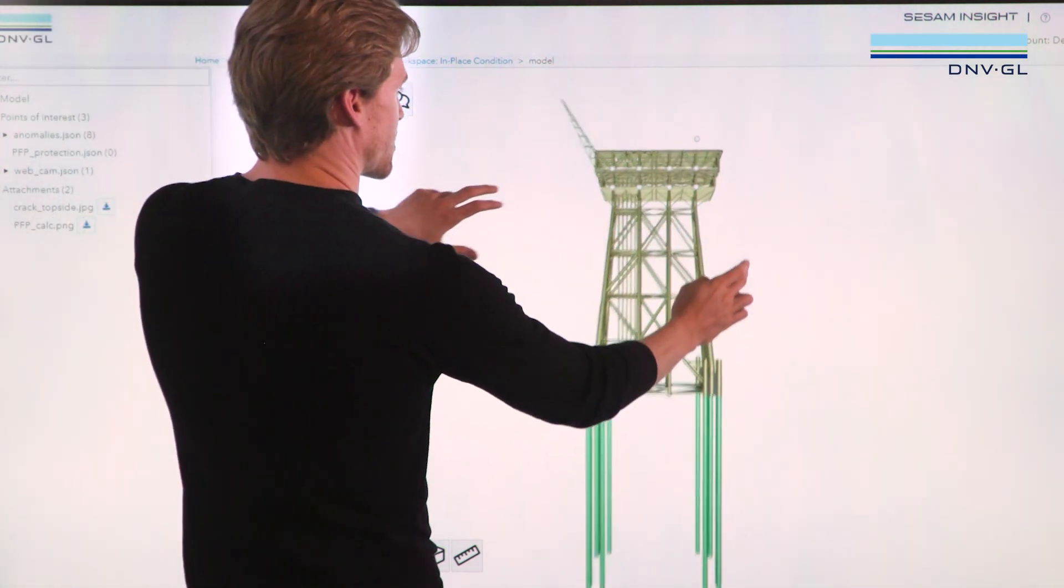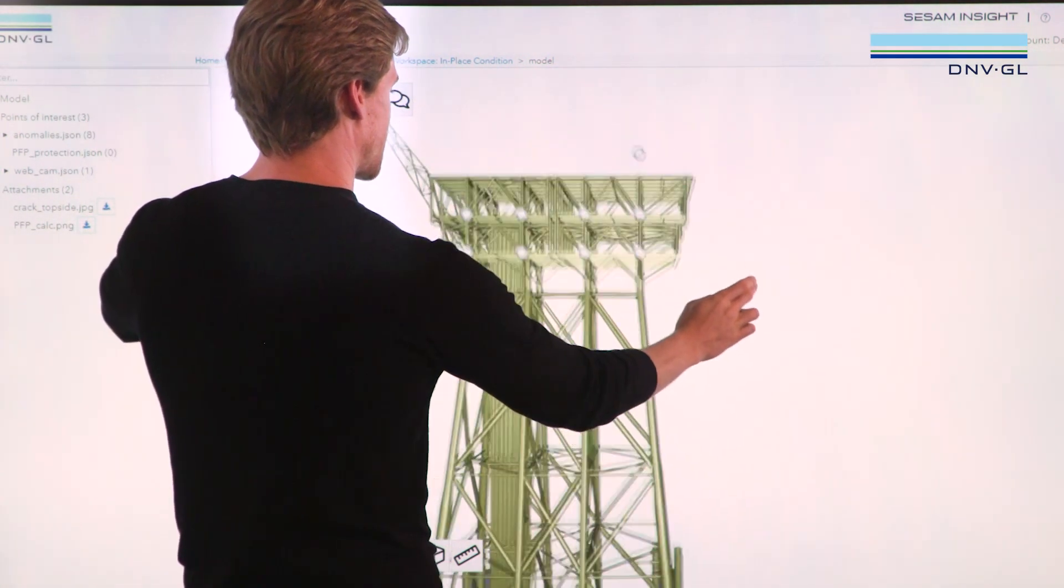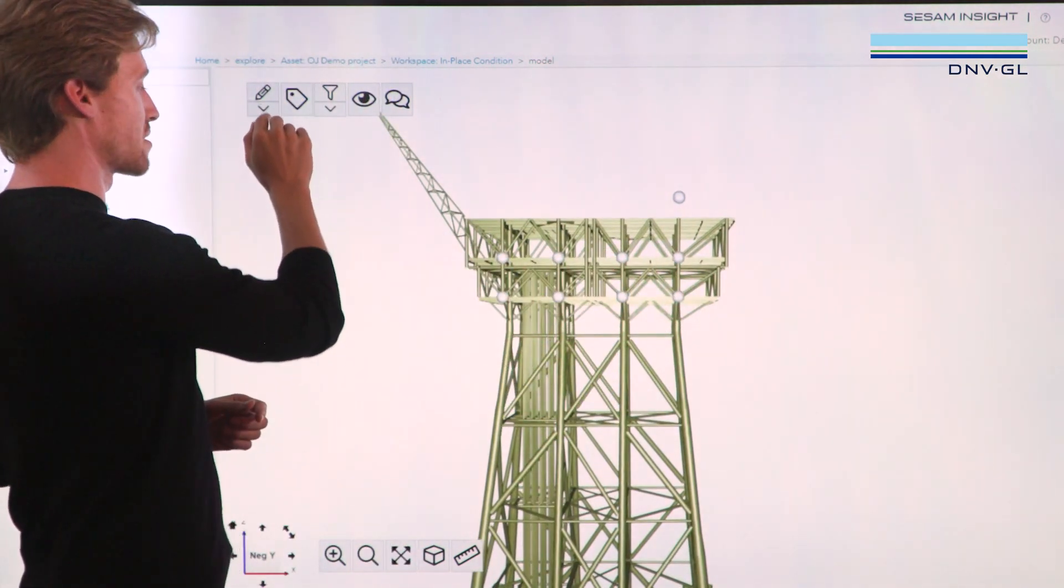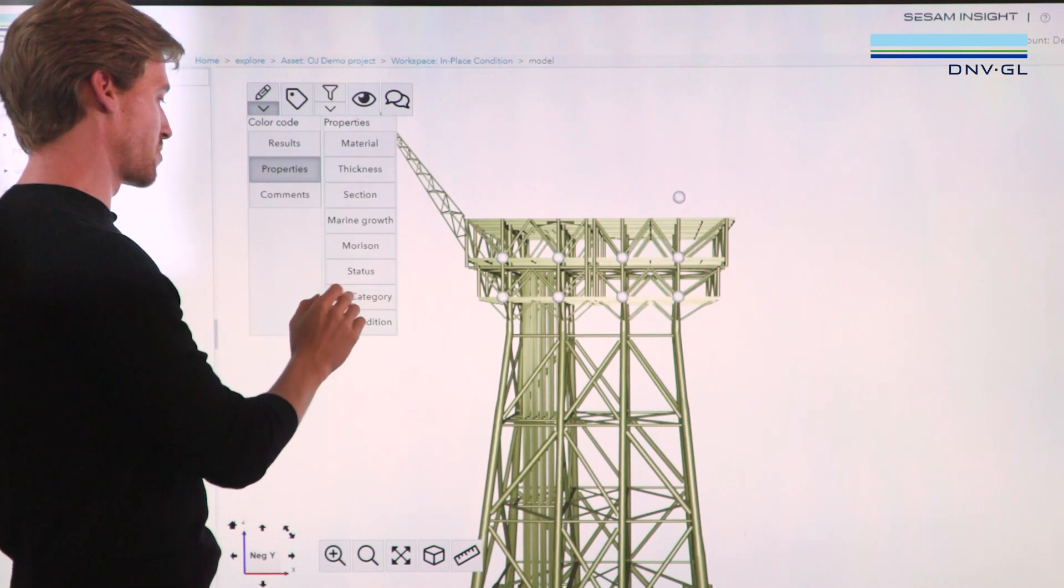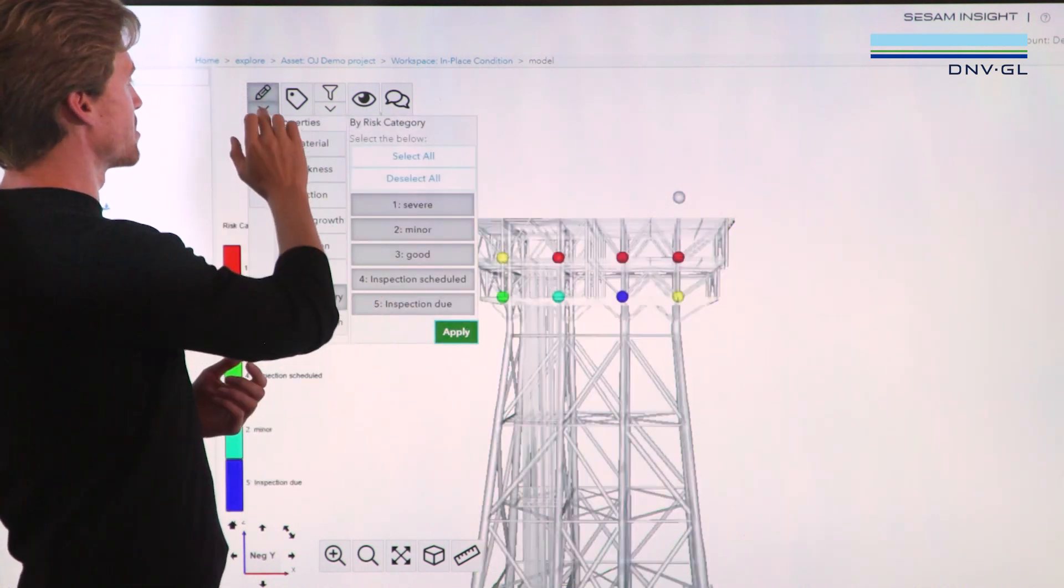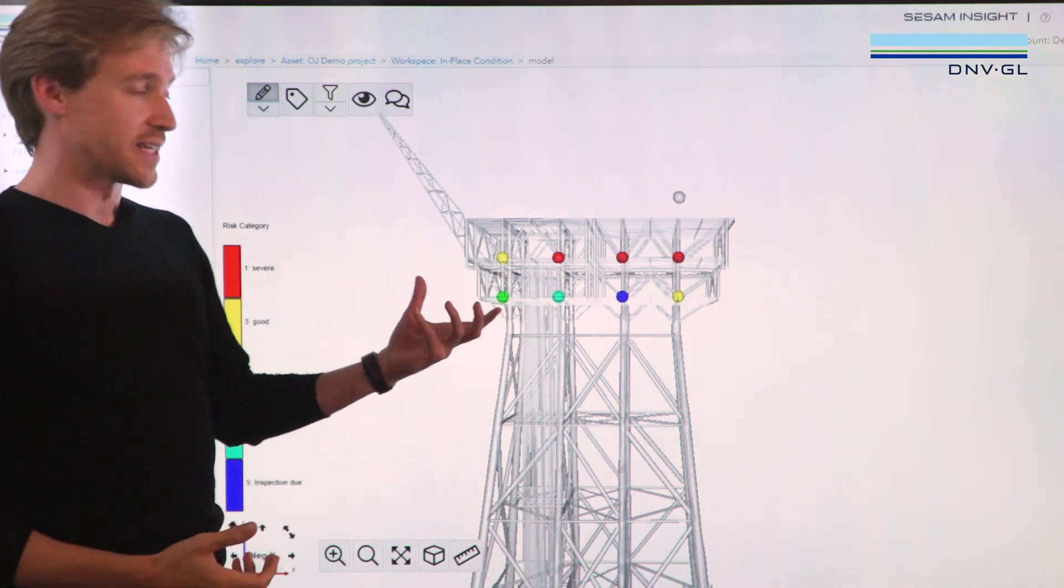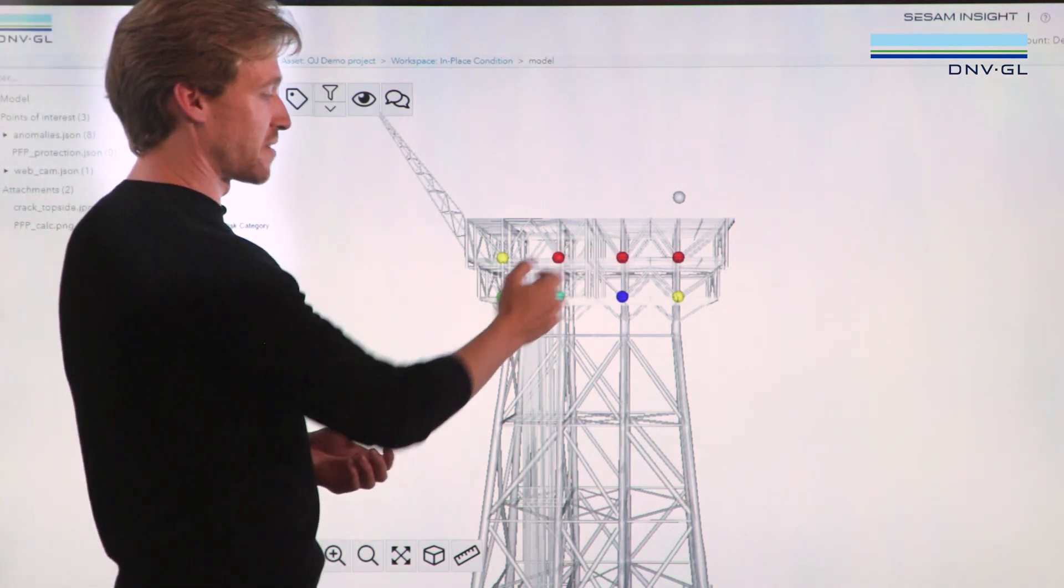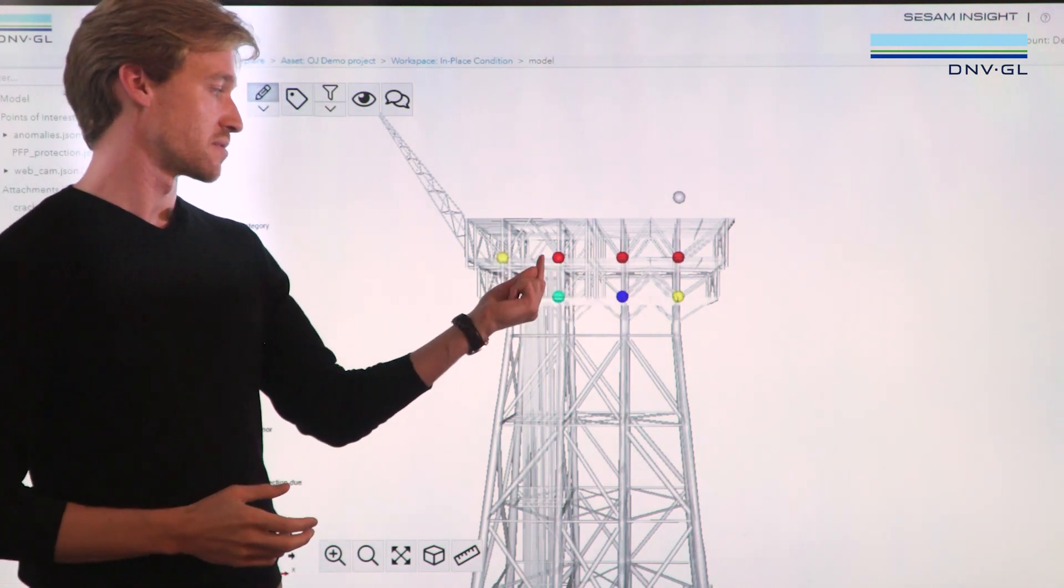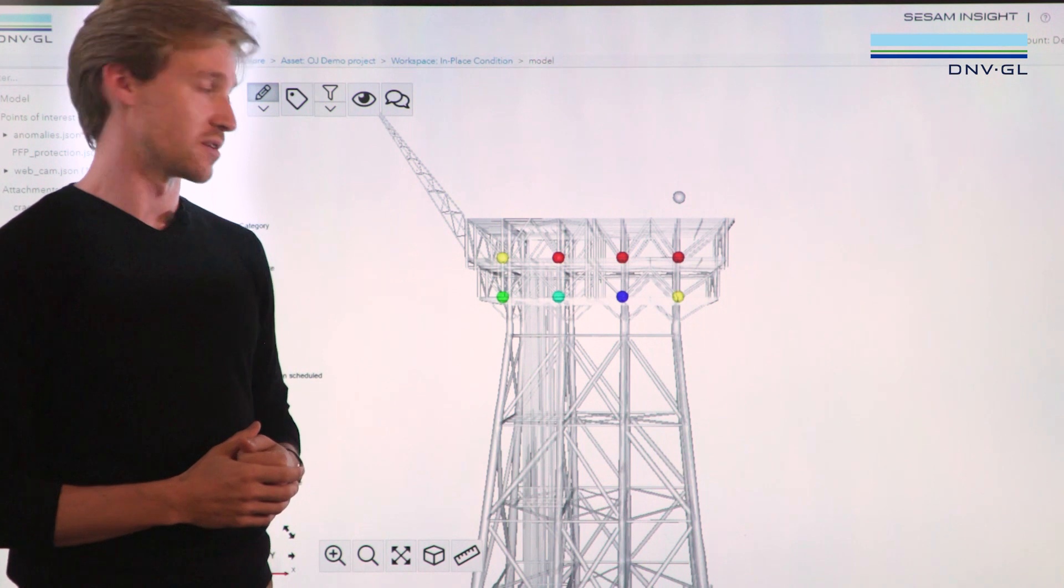If we take a closer look at the topside part of this asset, you will see these spheres distributed along the topside, and what they represent are inspection points. So somebody has carried out an inspection on this asset and has logged their findings, and apparently there were three severe findings on the topside visualized by these red dots.